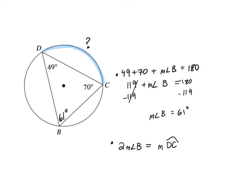In other words, 2 times the measure of angle B equals the measure of arc DC. So 2 times 61 gives us 122. And that's the measure of arc DC.